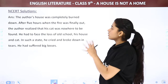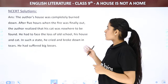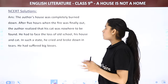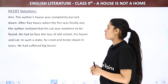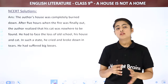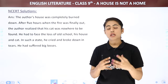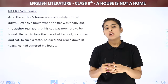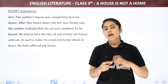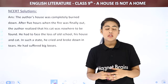So the answer to this question would be: The author's house was completely burnt down. After five hours, when the fire was finally out, the author realized that his cat was nowhere to be found. He had to face the loss of his old school, his house, and his cat. In such a state, he cried and broke down in tears — he had suffered big losses. After five hours to extinguish the fire, he realized his cat was missing. As he recognized he had lost his old school, old friends, the house, and the cat, that made him realize he had suffered a lot of losses recently, and that is what made him cry so loudly.